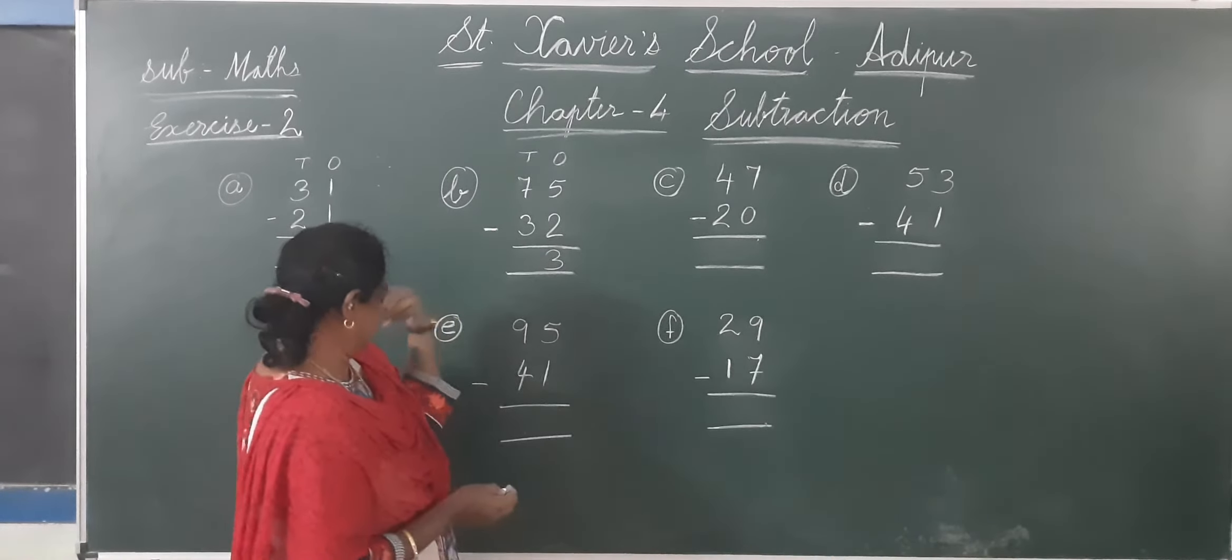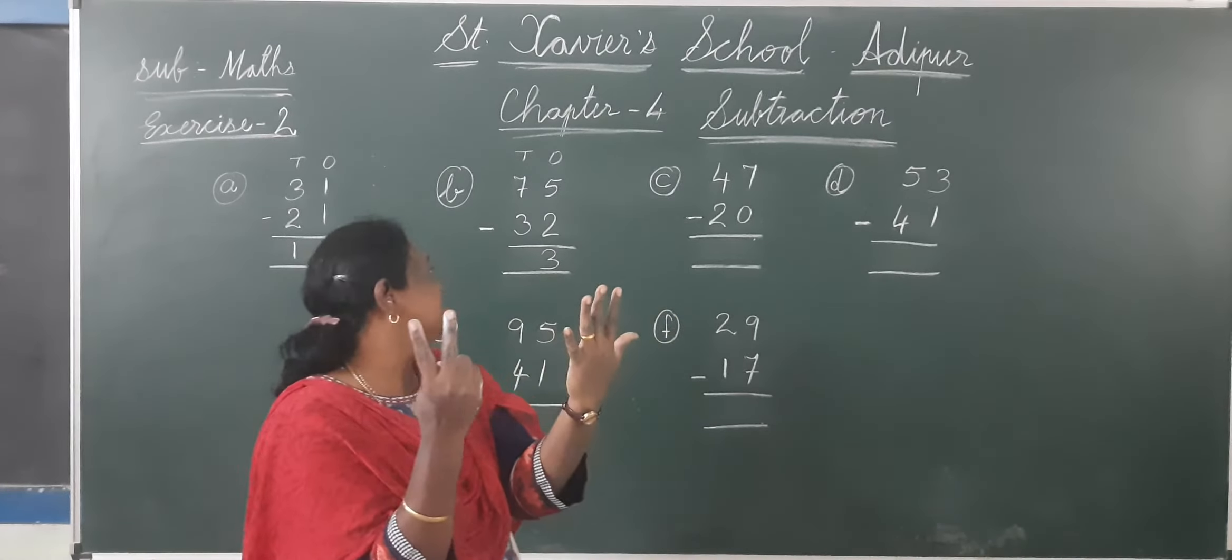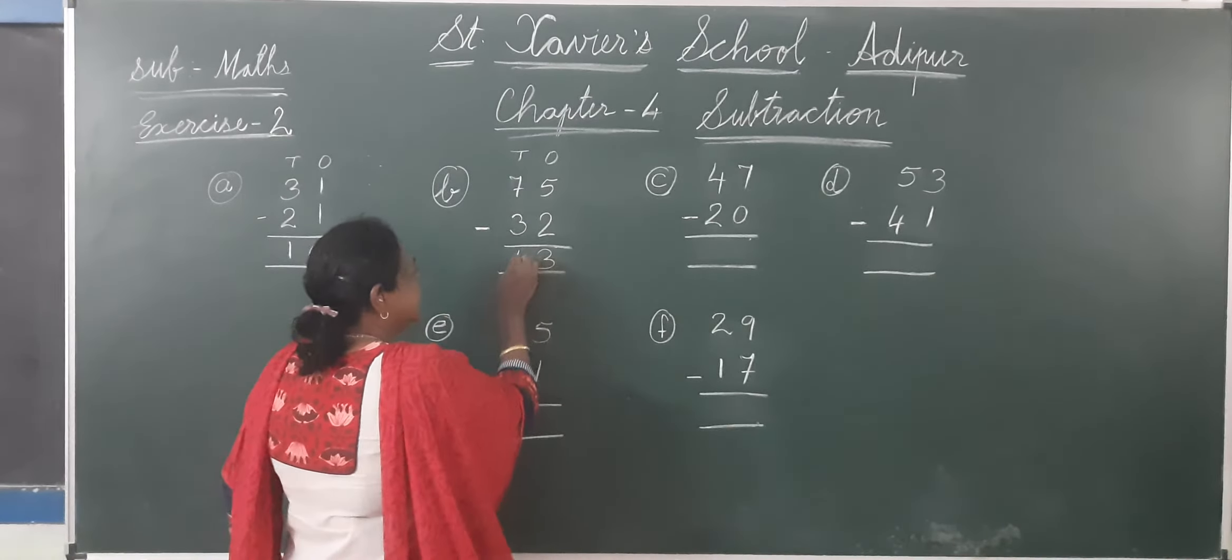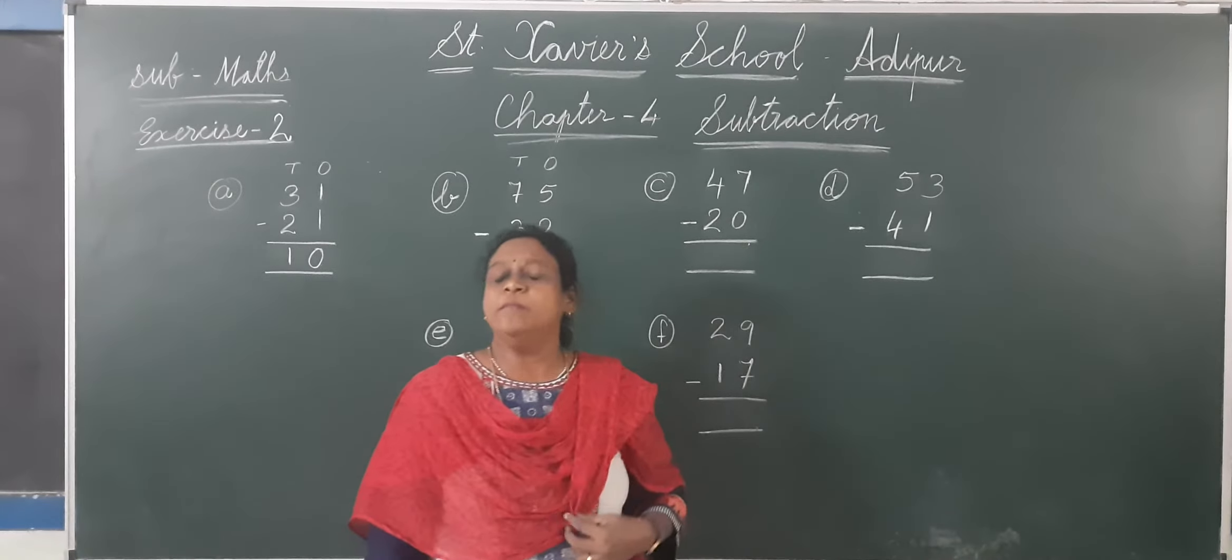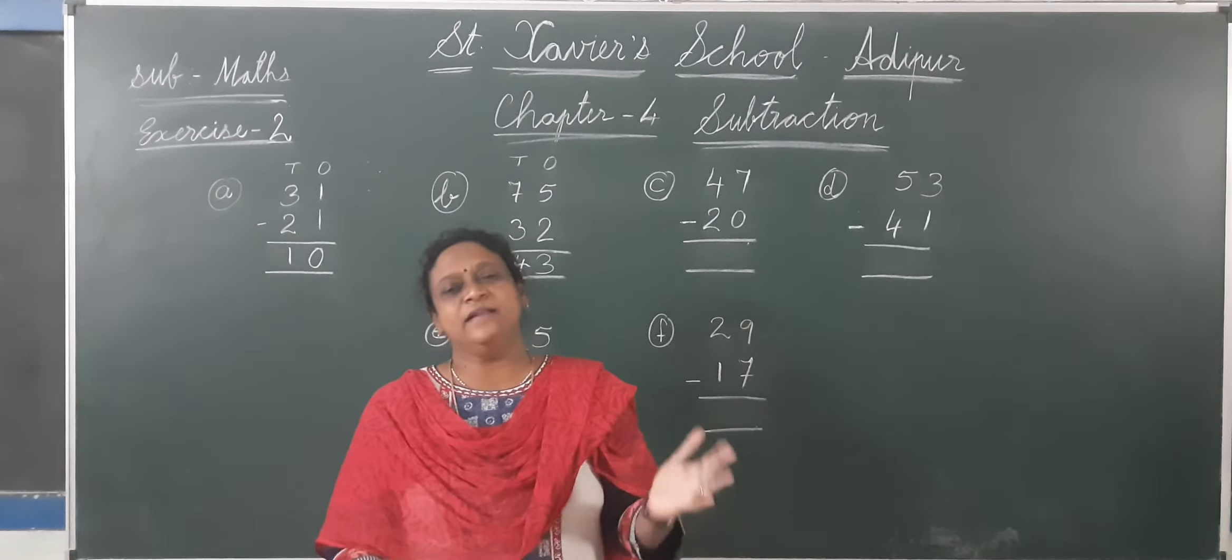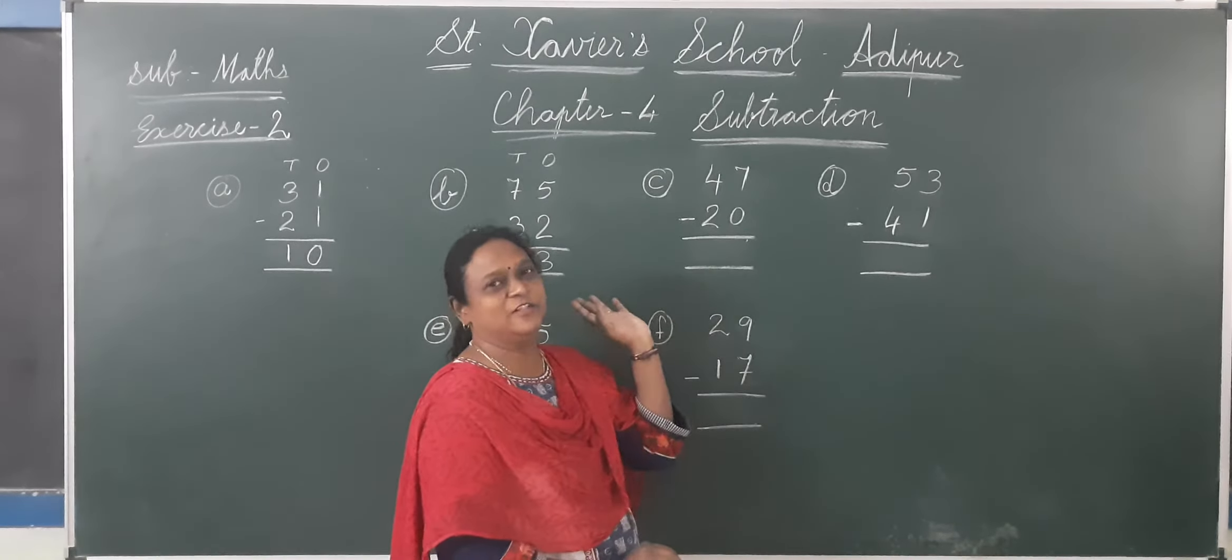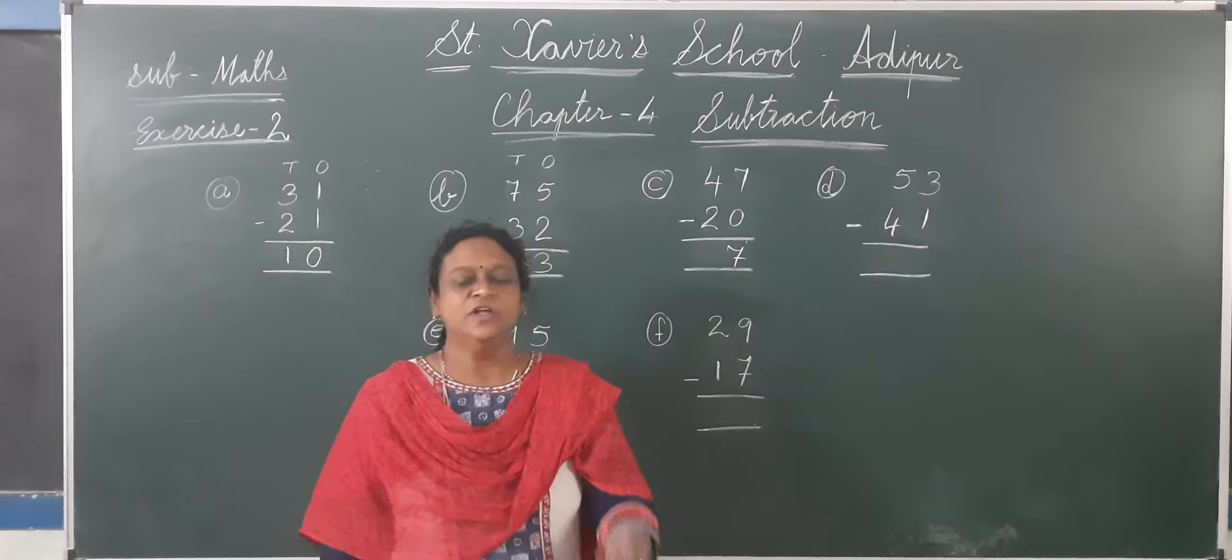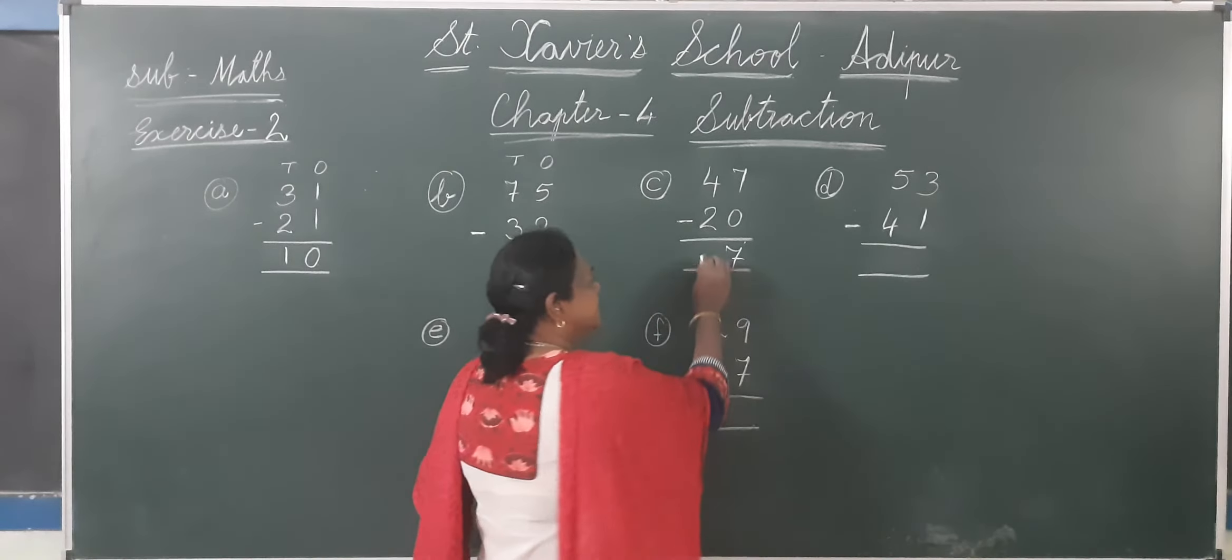This is 7 minus 3. 5 fingers and 2 fingers together, how many fingers? 7. 1, 2, 3. Kitna baaki hai? 4. So right, remaining is 4. Now 47 minus 20. 7 minus 0. Answer kya hai ga? 0 means kuch nahi. Hamare pass hi hai 7 chocolate. Answer will be same 7. 4 minus 2, 4 fingers then minus 2, 1, 2. Remaining is 2.